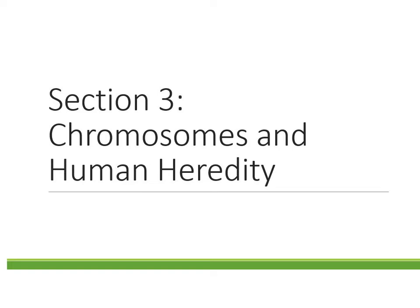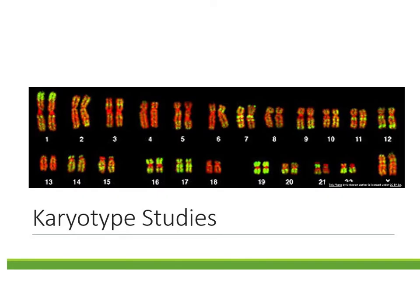Our last section covers chromosomes and human heredity. When scientists or geneticists study human genetics, we look at more than just alleles or individual genes — sometimes we study whole chromosomes. Whenever we have a map of someone's complete set of chromosomes, that's called a karyotype. It's a map of all 23 pairs of chromosomes, and they get stained during metaphase of the cell cycle.